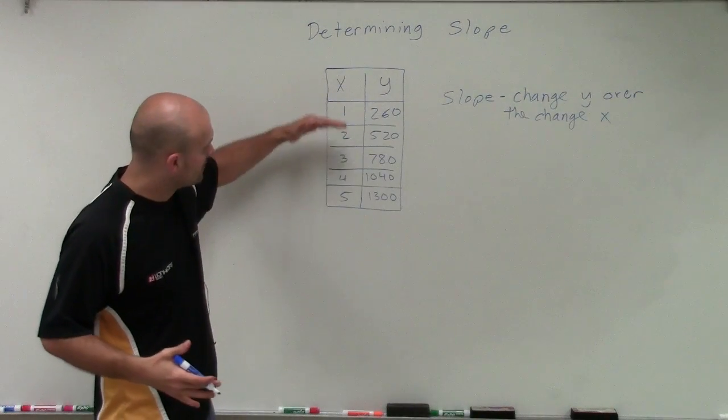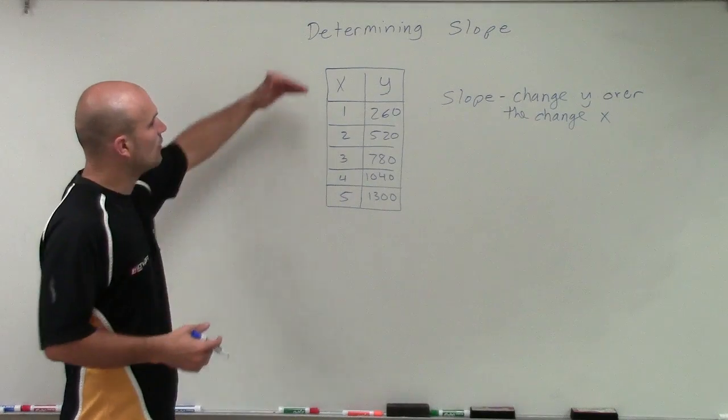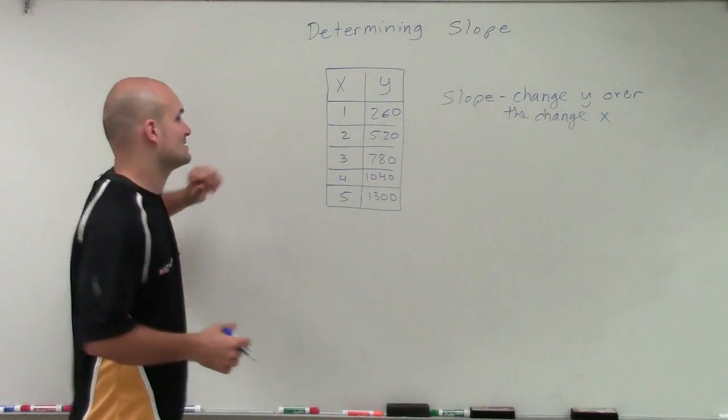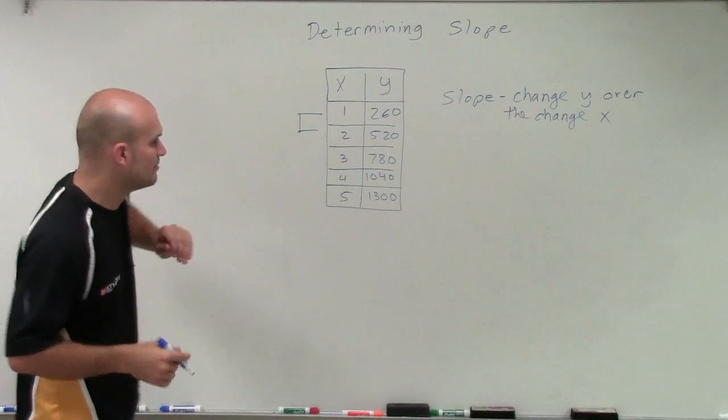As we're going from 1, 2, 3, 4, 5, let's check out what is the change in our y over our change in our x. So let's look at our first two points. If I was going to go from point 1 to point 2.